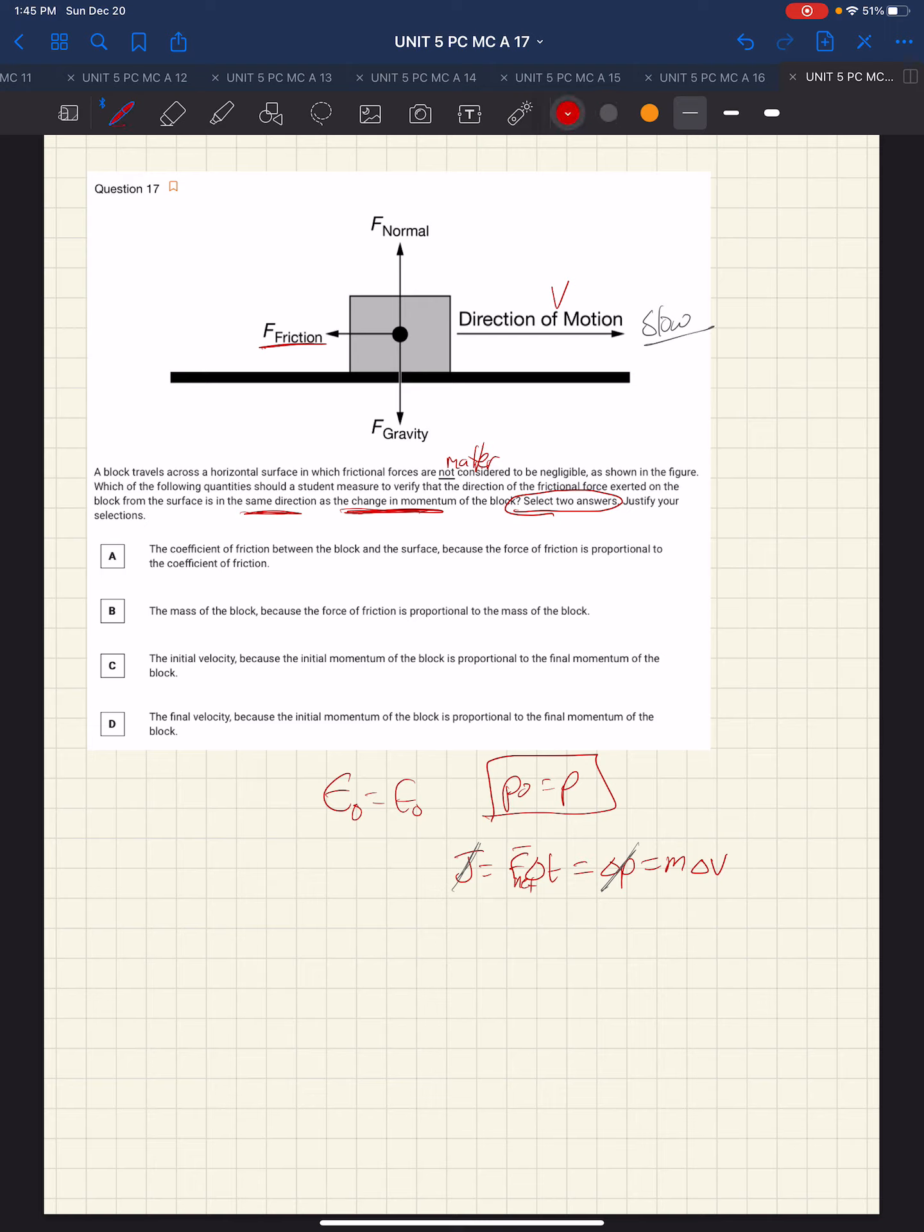If we pull those two down, F_net·Δt = m·Δv. The net force in this case, the force causing this, is the force of friction. So that is going to be m·Δv over Δt.